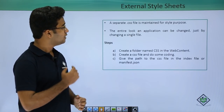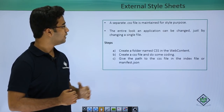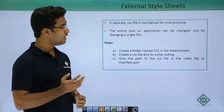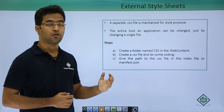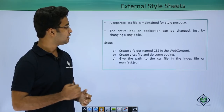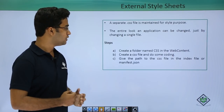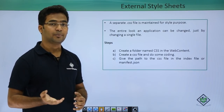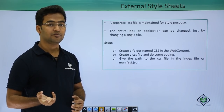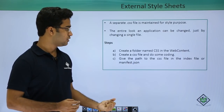Moving on, here I have described how to implement CSS using external style sheets — that is, creating a separate CSS file and maintaining all the styling in that file. Why do we use this? Basically, if we have a lot of controls and we need to change all their CSS, we create a separate CSS file so the entire look of the application can be changed using just that one file. To create this, we follow 3 steps: first, create a folder named CSS in the web content; second, create a separate CSS file and place it in that CSS folder; third, provide the path for the CSS file in the index file or the manifest.json file.